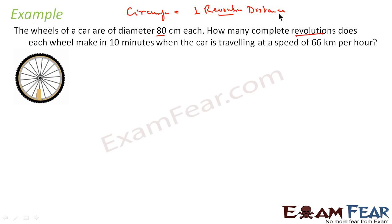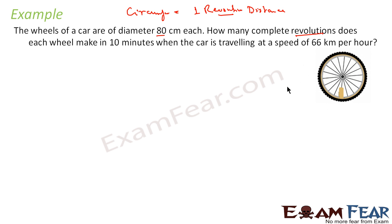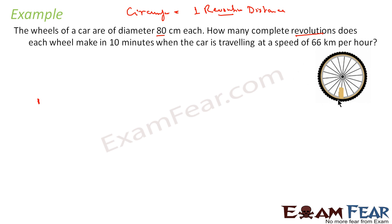The wheel starts here, goes around, and comes back to the same point — the total distance covered is one circumference. Circumference is nothing but the distance covered in one revolution. Since we know the diameter, we can find the circumference and therefore the distance covered in one revolution.